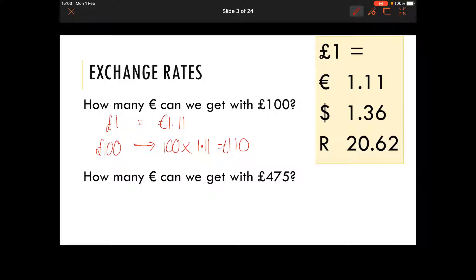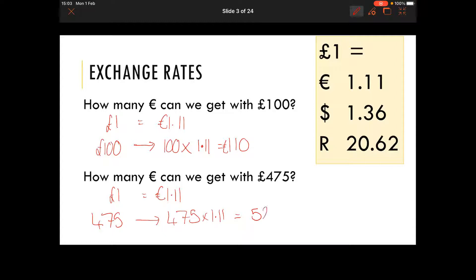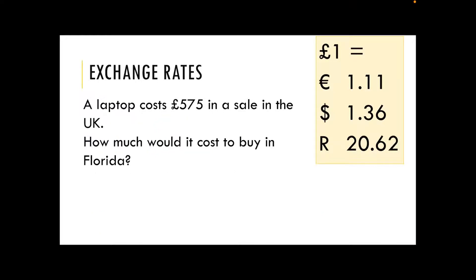How many euros can we get with £475? Well, one pound equals one euro and eleven cents, so £475 going across — we take that 475 and multiply by the exchange rate — gives us 527.25 euros. We always check: is it to two decimal places? Yes it is, so we don't need to do any rounding. That's the amount that £475 is worth in euros.